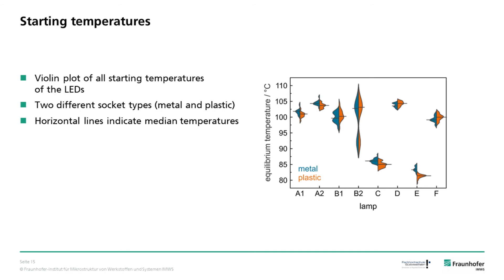The socket does not make a huge difference in the equilibrium temperature of the LEDs. Lamp B2 seems to consist of two different sets of LEDs which have different temperatures. Most of the LEDs have a starting temperature of around 100°C, and the LEDs in lamps C and E are significantly cooler.